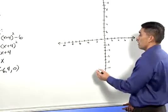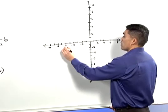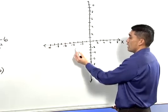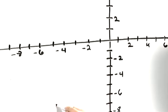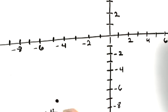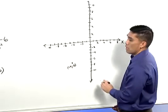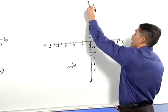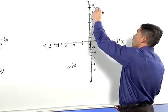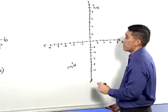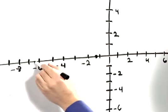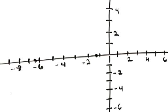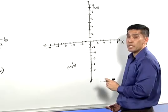First, the vertex. The vertex lies at the point negative 4, negative 6. The y-intercept at 0, 10. The x-intercepts at negative 1.6, 0 and negative 6.4, 0. And now we can connect the dots to make this parabola.